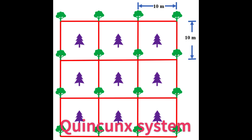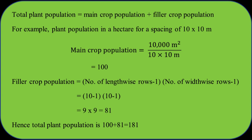In the quincunx system, the area is divided into square grids and plants of the main crop are planted at all the corners of the squares, while plants of a short-lived filler crop are planted at the center of the squares. The short-lived filler crops are removed when the main crop comes to bearing. As the planting of trees also appears on the diagonal lines, it is also known as the diagonal system. The plant population in this system is double that of the square system. It is calculated by adding the main crop population — area divided by planting distance — with the filler crop population, which equals the number of lengthwise rows minus 1, multiplied by the number of widthwise rows minus 1.